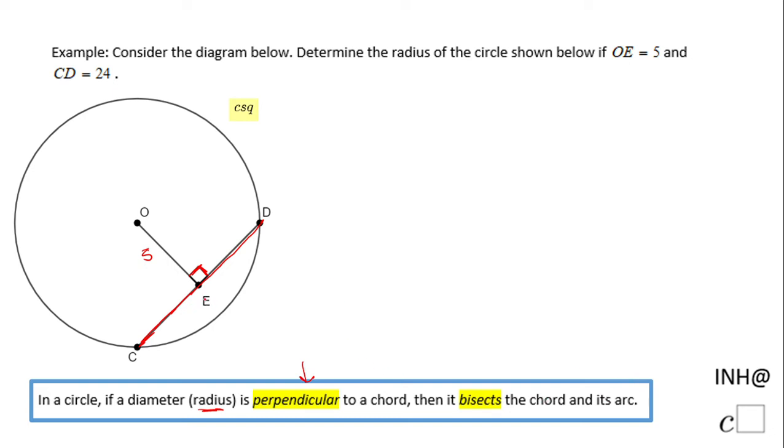We know this part of the radius, part of the diameter, this OE is perpendicular on the chord. That means these two segments are congruent because this segment OE bisects CD. And remember CD is 24. That means CE, which is going to be equal to ED.